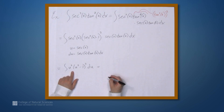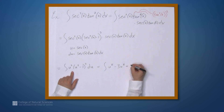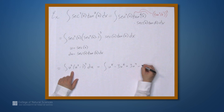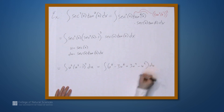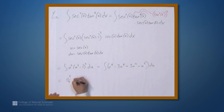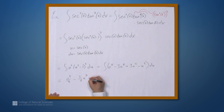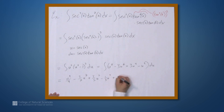Expanding this, we get the integral of u⁸ - 3u⁶ + 3u⁴ - u² du, just like expanding any polynomial. Finding the antiderivative of each term gives us u⁹/9 - 3u⁷/7 + 3u⁵/5 - u³/3 plus C.